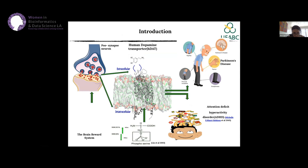Now I'll give one example we published recently about the human dopamine transporter. It's an important protein involved with several diseases, for example Parkinson's and attention deficit hyperactivity disorder. It functions as a channel in a membrane, allowing dopamine to enter and exit the cell, controlling the influx and efflux of dopamine.